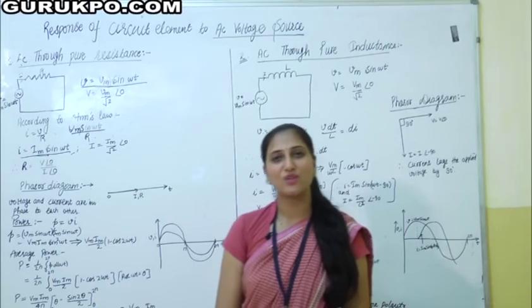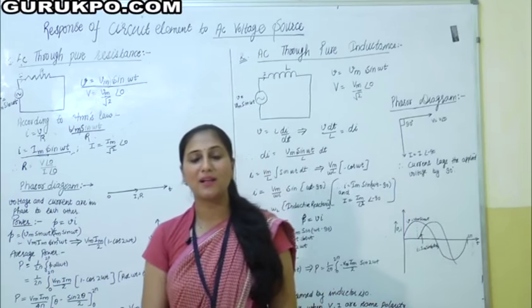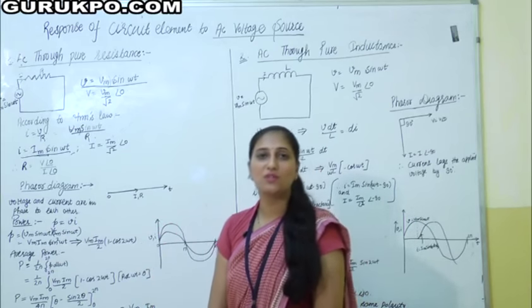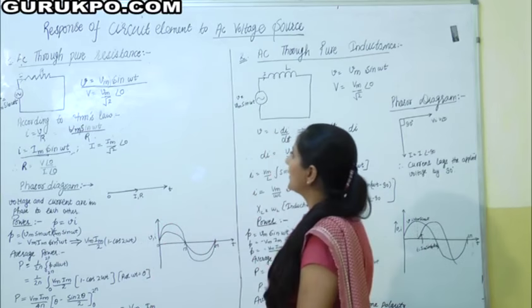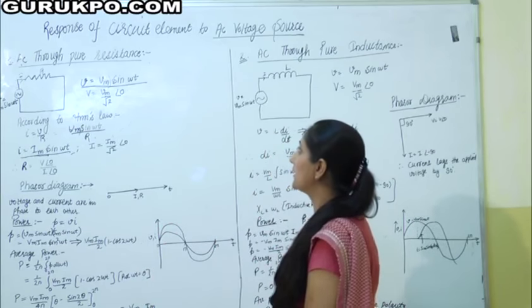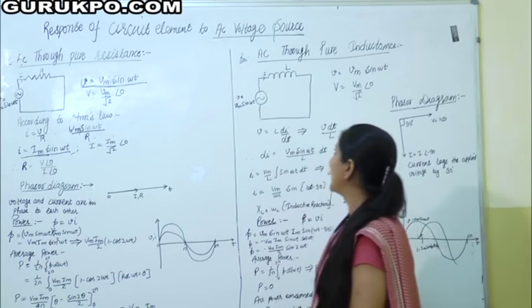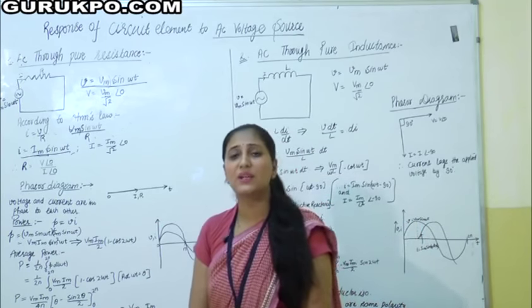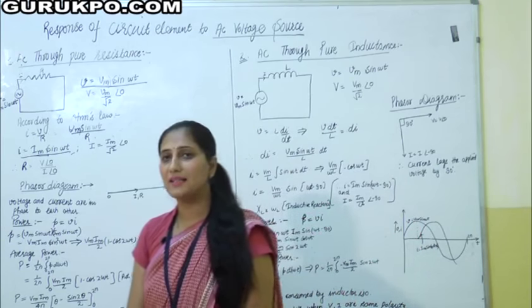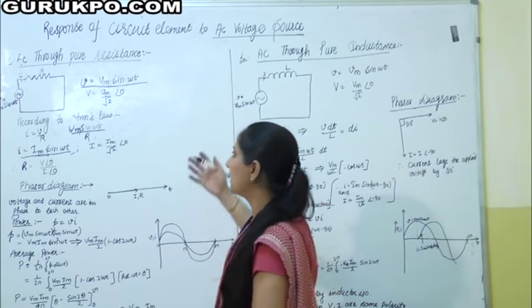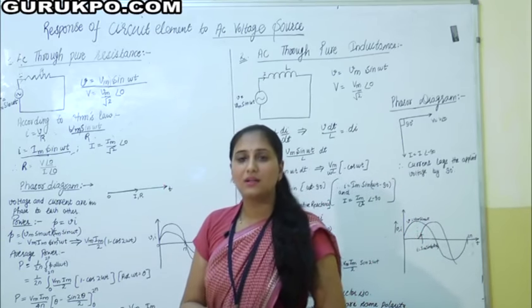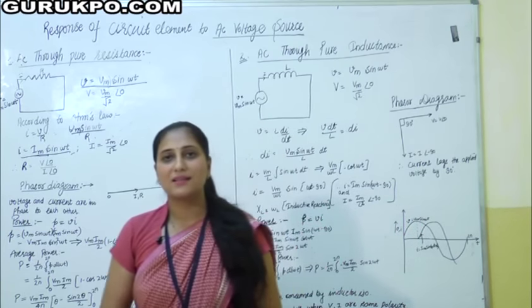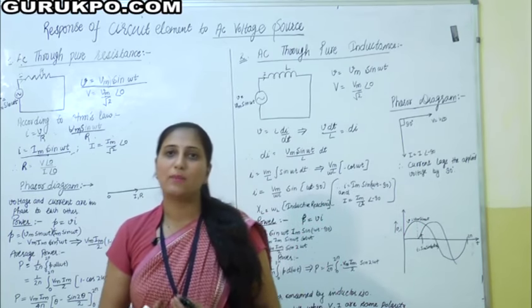Hello friends, I am Ishra Maidani. Welcome back to you on behalf of Guru KPO. Today we will discuss the response of circuit elements to an AC voltage source. We all know the main three basic elements of our AC circuits are resistor, inductor, and capacitor. We will discuss each one by one.